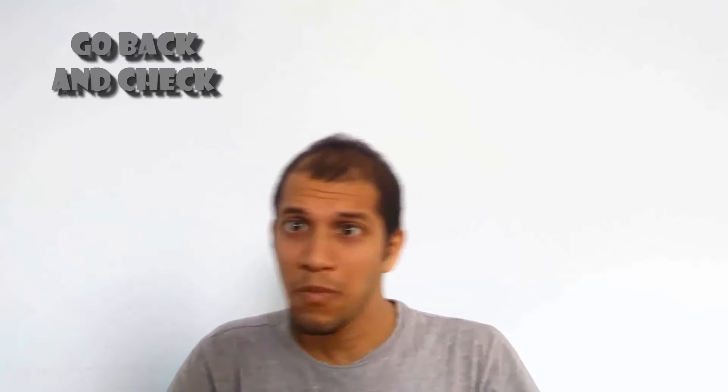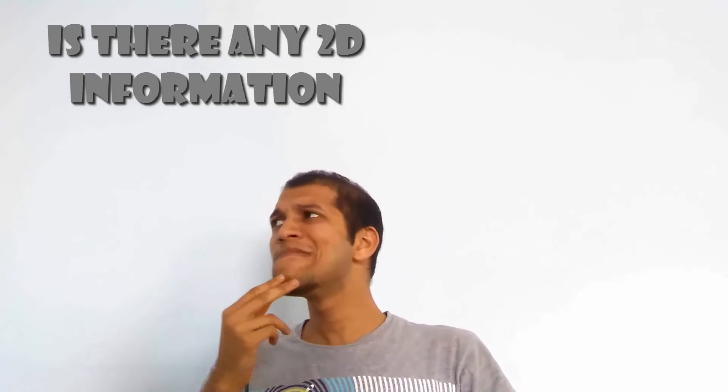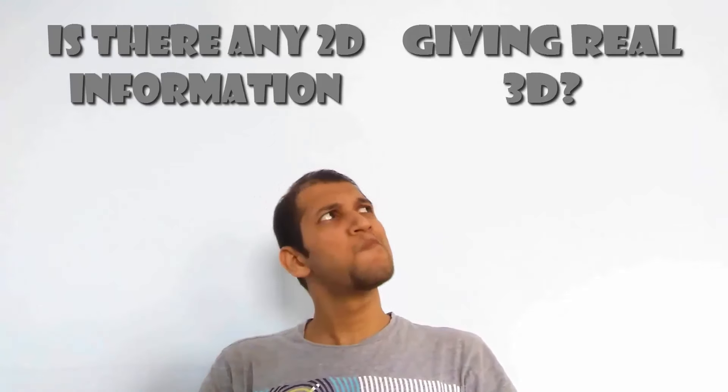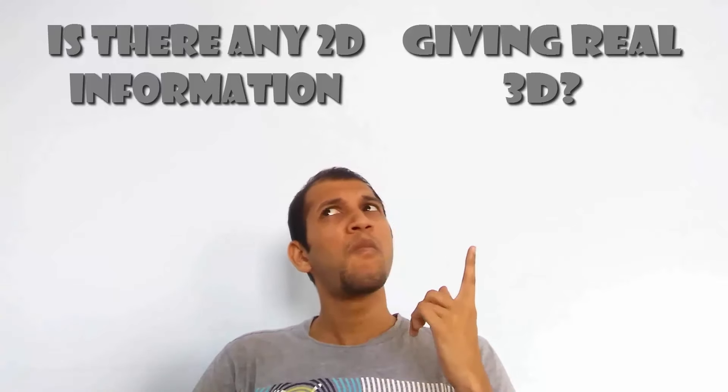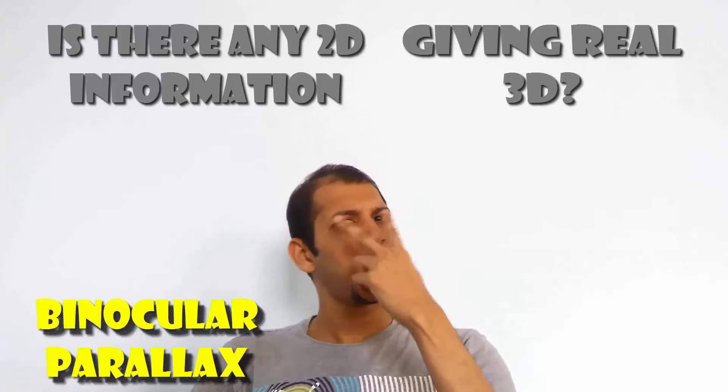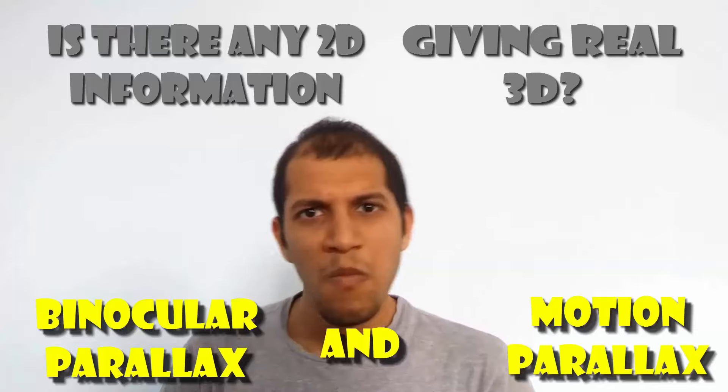You could just go back and try the same on that 3D picture. So is there anything 2D which gives you complete 3D information? Not only binocular parallax, but also motion parallax?